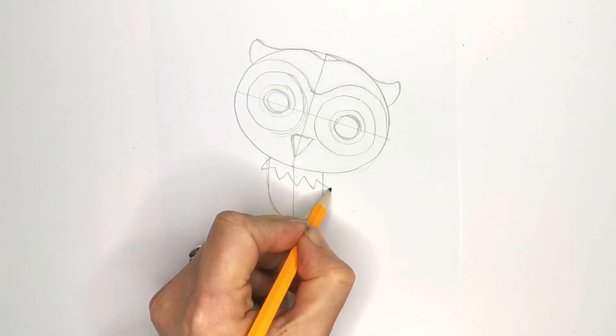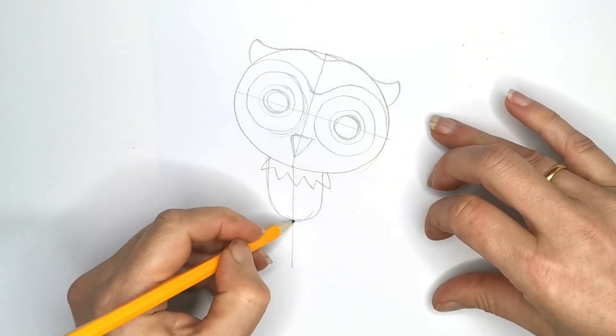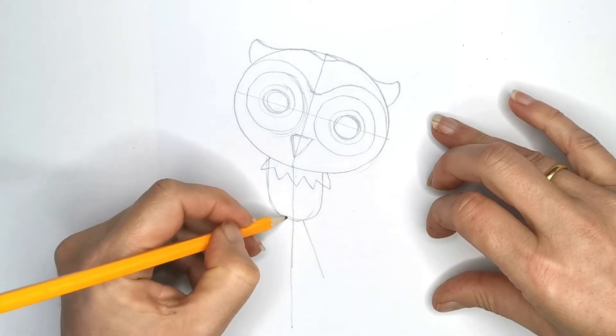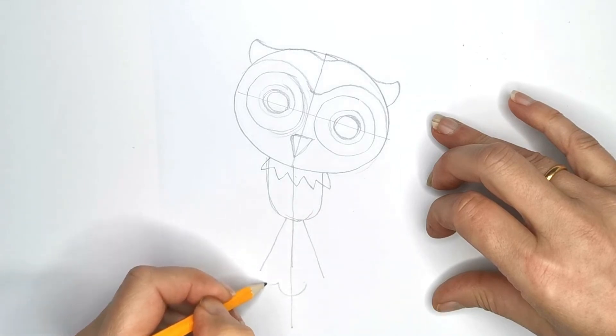Let's give him a ruffle round his neck. Let's give him a beautiful tail. We'll fan that out. There we go. And we'll do a nice curve here.